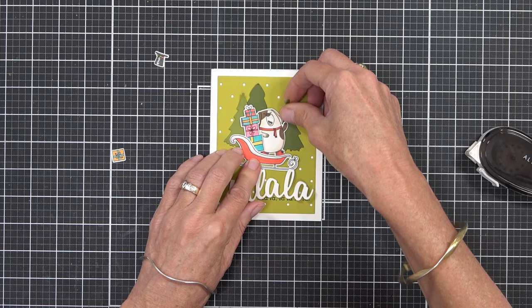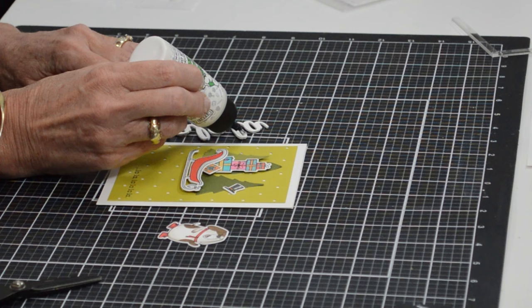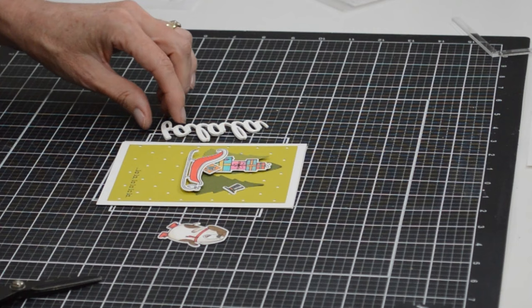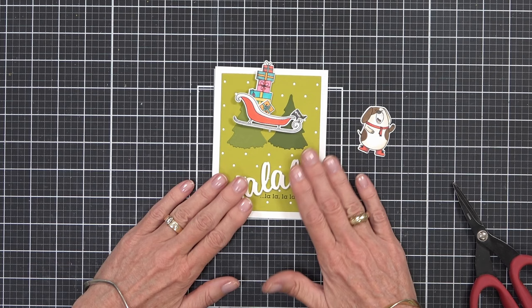So my scene needed a few little trees and you could easily just cut some triangles yourself or die cut or stamp some trees and cut them out if that's what you've got. And then I could add the sentiment to the front of the card which I did with some liquid glue because it is, like I said, quite thick. And for the rest of my scene I've added the sleigh with some presents and a singing dog.